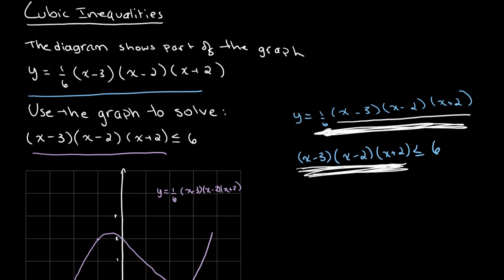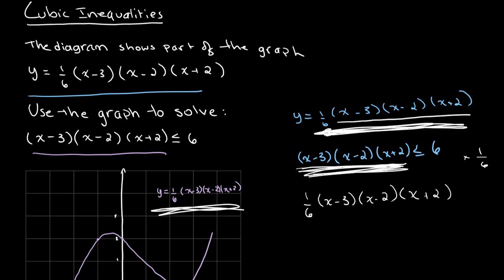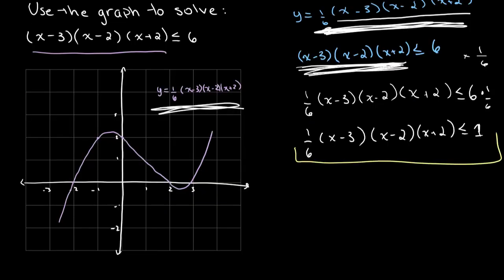What we can do is multiply both sides by 1/6. So we get (1/6)(x − 3)(x − 2)(x + 2) on the left side. By multiplying by 1/6 we made it match the equation represented in our graph. On the right side, 6 × (1/6) = 1, so our inequality becomes (1/6)(x − 3)(x − 2)(x + 2) ≤ 1.